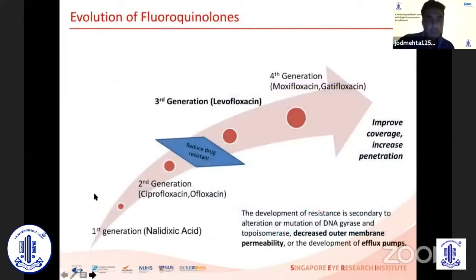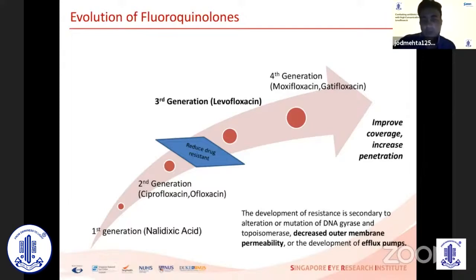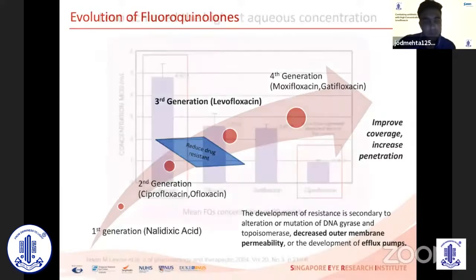Over the years we've seen an evolution of fluoroquinolones from the first generation all the way to what we consider to be the fourth generation. Drug resistance has really occurred between the second and third generation, and there are several ways resistance has occurred, as Professor Sharma discussed — alterations or mutations in the DNA gyrase, effects on the outer membrane affecting permeability, and effects on the efflux mechanism.